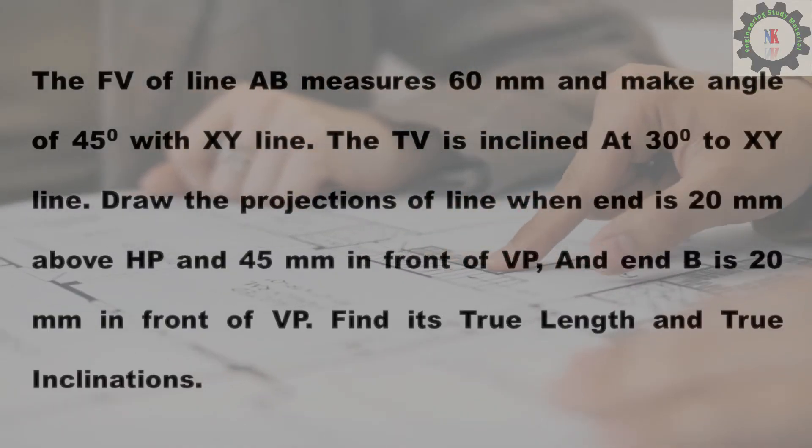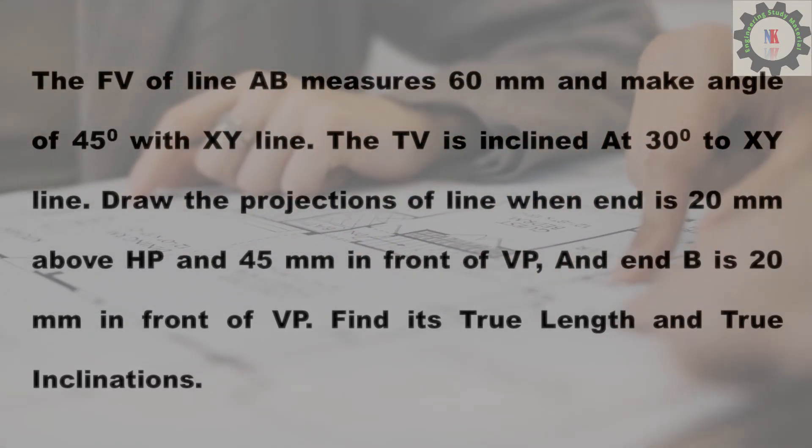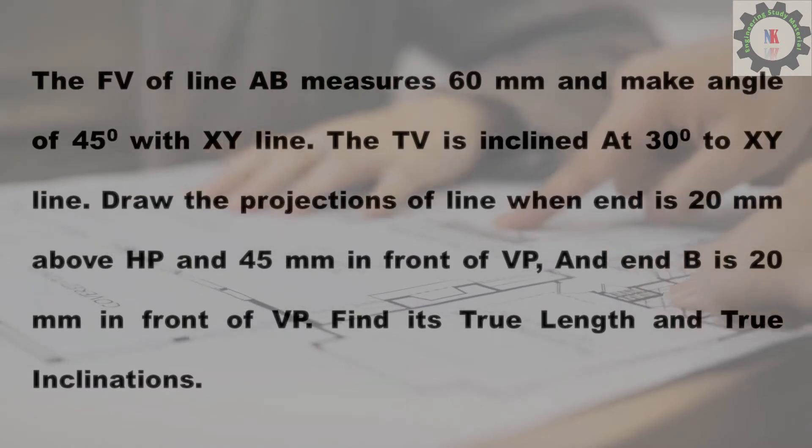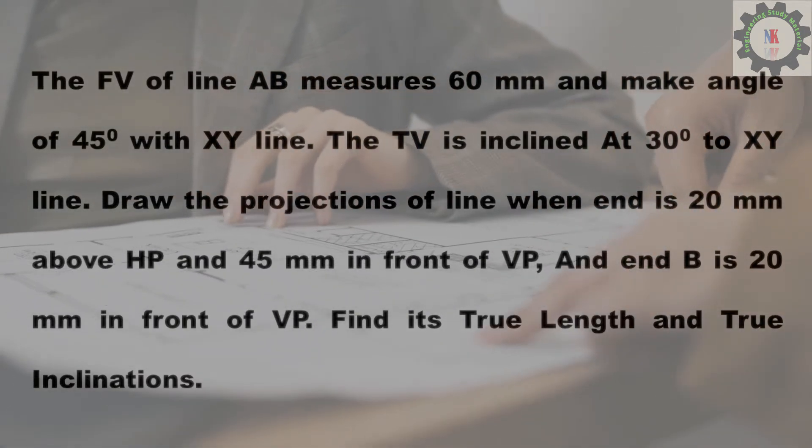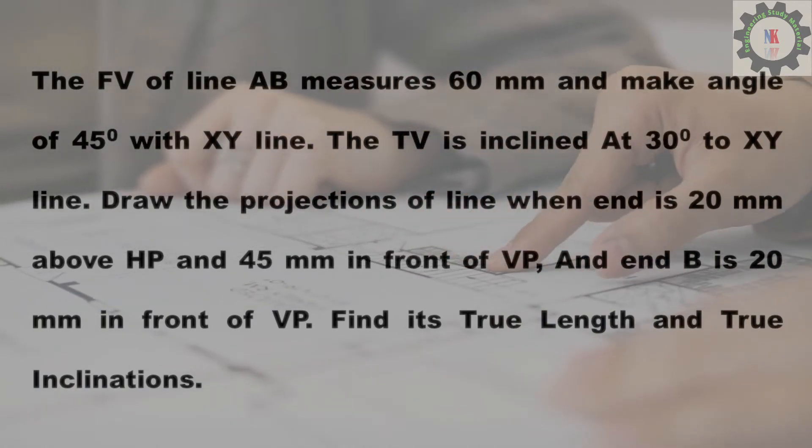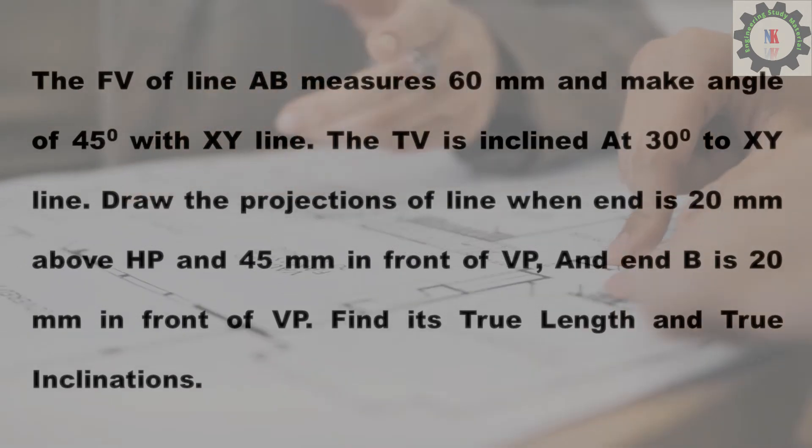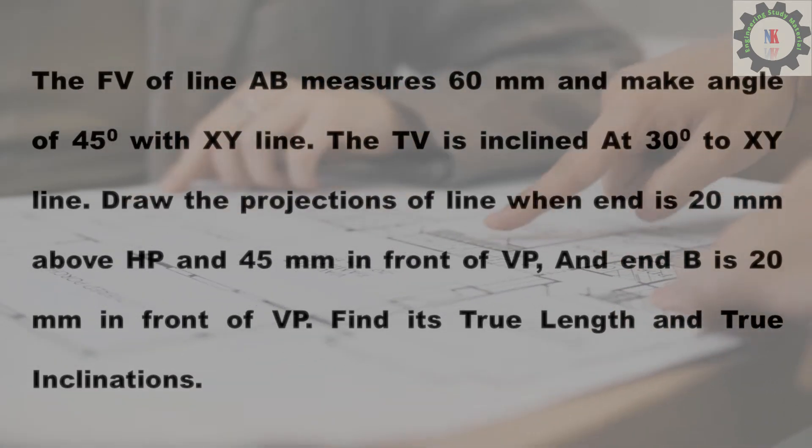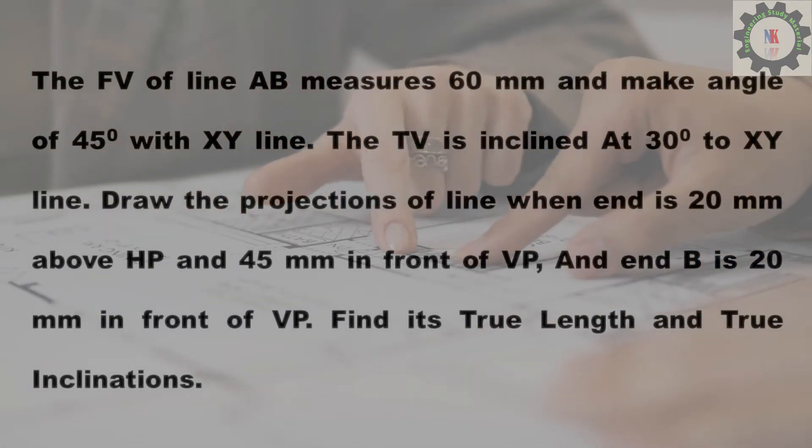The front view of line AB measures 60 millimeters and makes an angle of 45 degrees with XY line. The top view is inclined at 30 degrees to XY. Draw the projections when end A is 20 millimeters above HP and 45 millimeters in front of VP, and end B is 20 millimeters in front of VP. Find its true lengths and true inclinations.